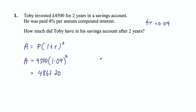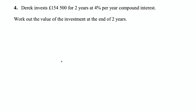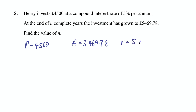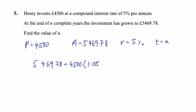That's a basic example. You can also be asked to find different parts of the formula. Here's an example where we calculate n: Henry invests £4,500 at a compound interest rate of 5% per annum. At the end of n complete years the investment has grown to £5,469.78 — find the value of n. We have P = 4,500, A = 5,469.78, and rate = 5%, but we don't have the number of years.